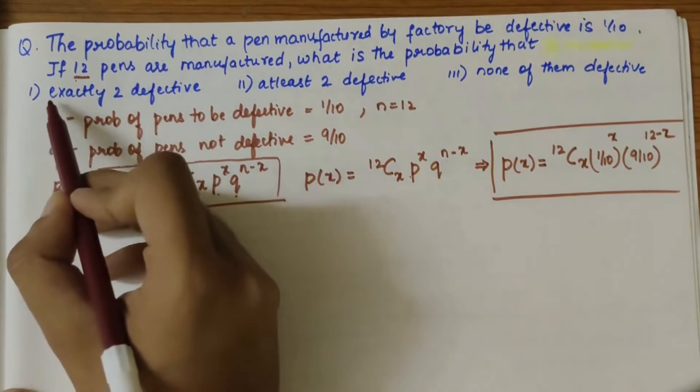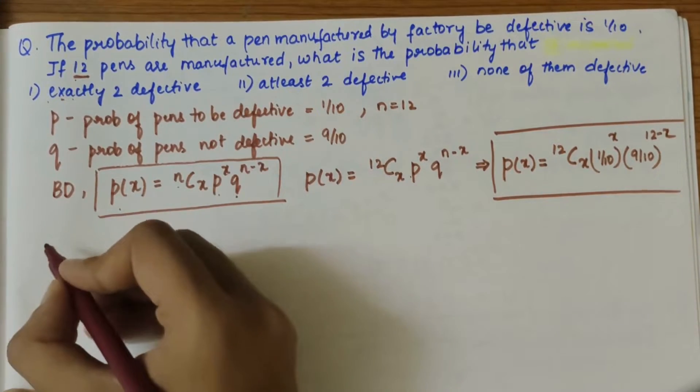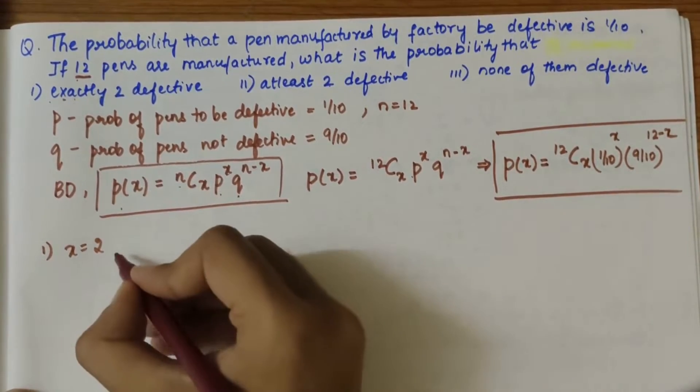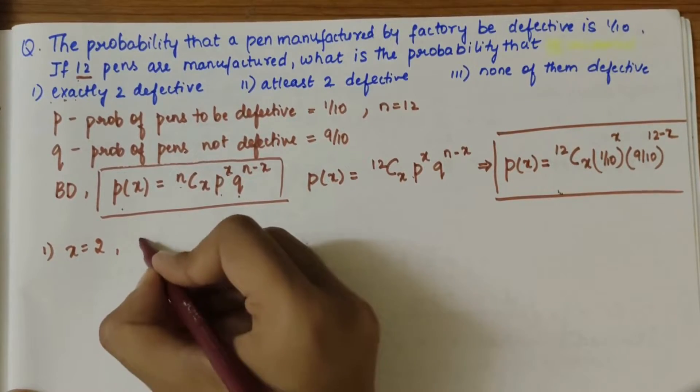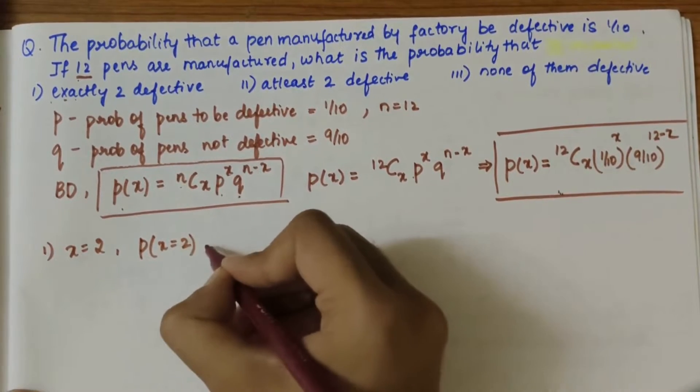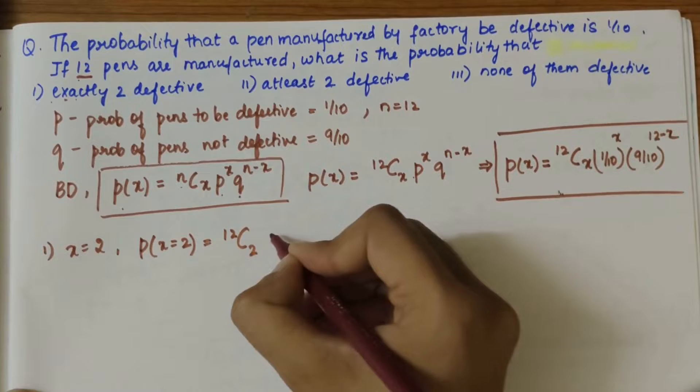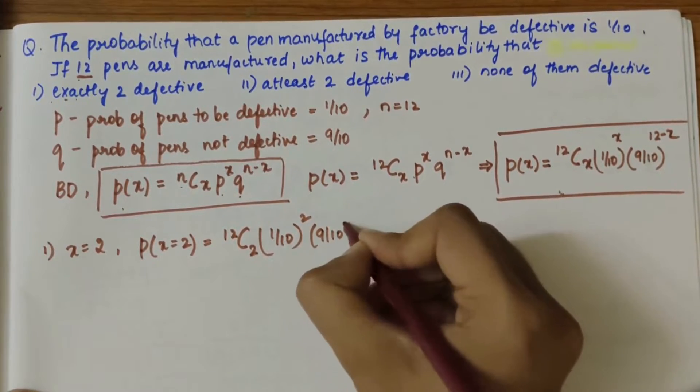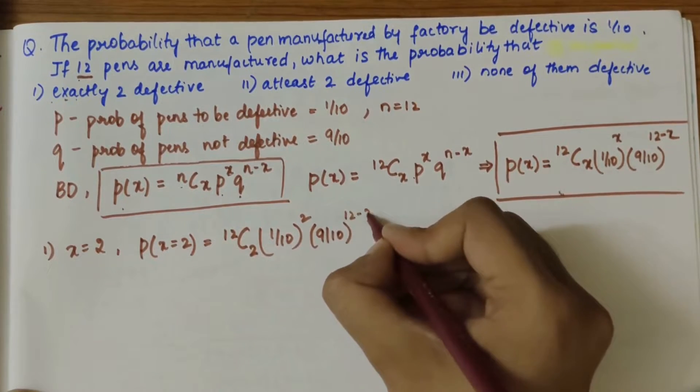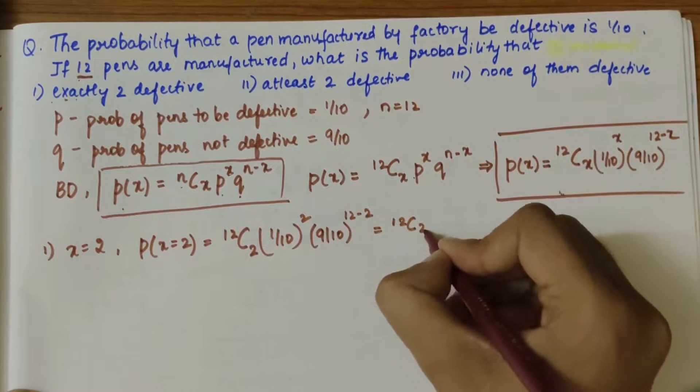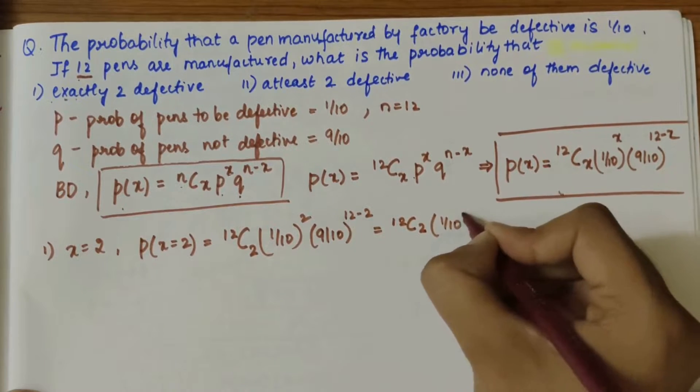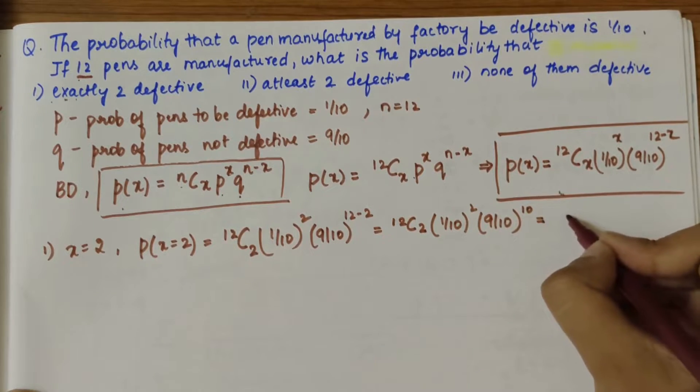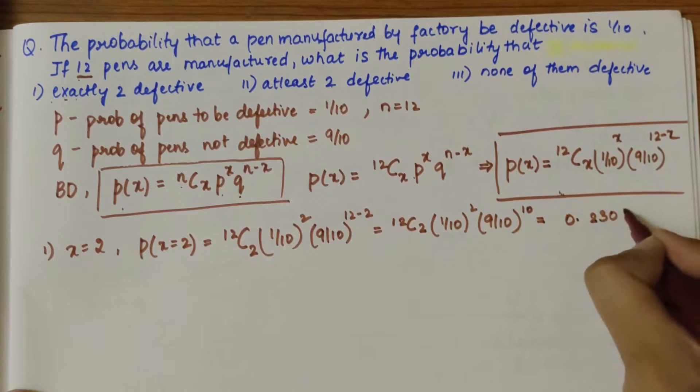The first part is exactly two are defective, so X value is 2. This can be rewritten as P(X=2) = 12C2 times (1/10)^2 times (9/10)^(12-2). That is 12C2 times 1/10 squared times 9/10 to the power of 10. If you solve this you'll get 0.2301.